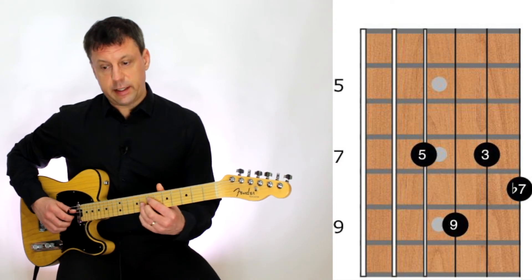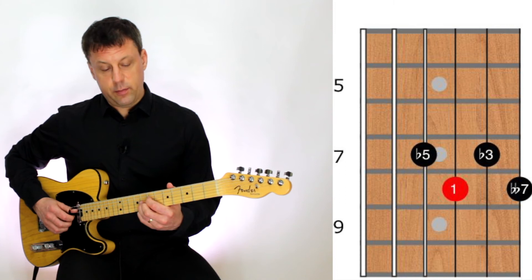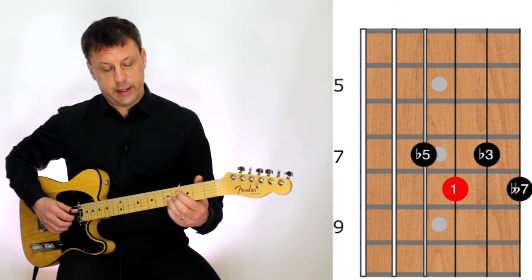Back to our D sharp diminished 7th chord. Any diminished 7th chord can move 3 fret jumps, so I can move from fret 7 down to fret 4.